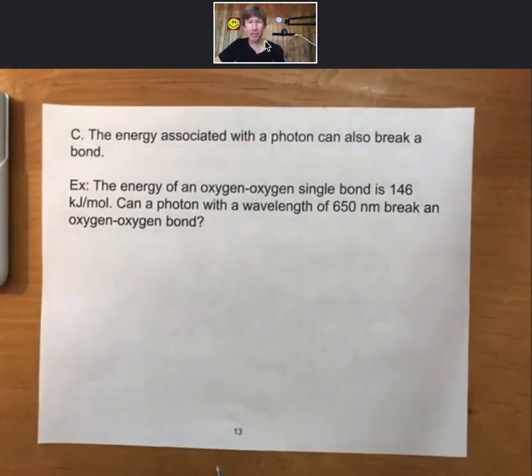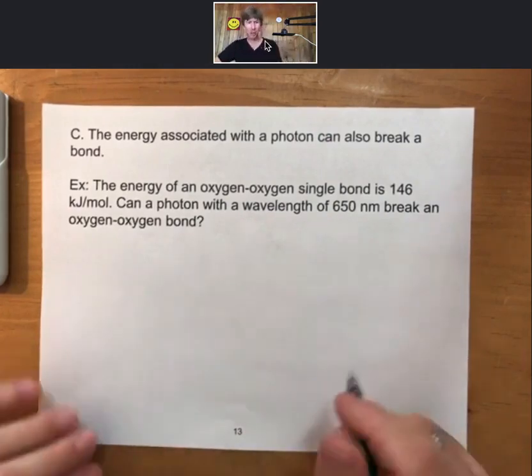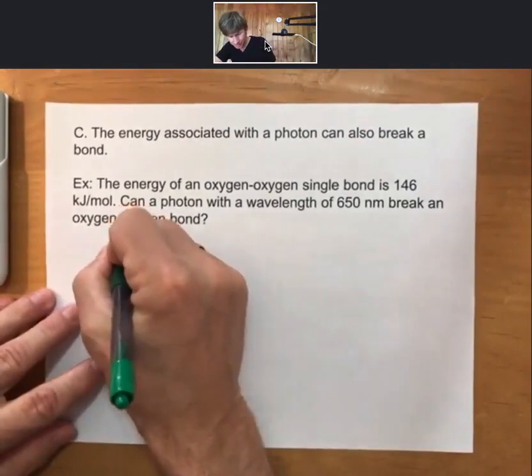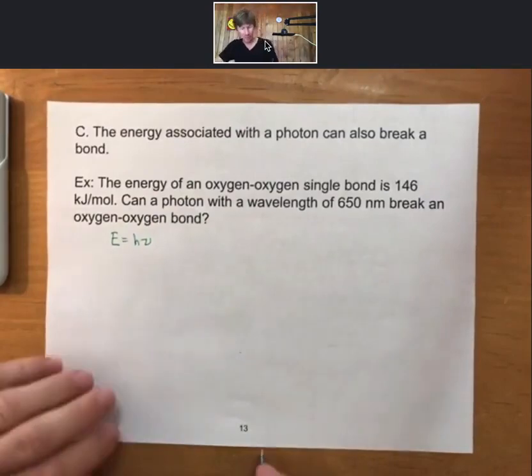As an example, the energy of an oxygen-oxygen single bond is 146 kilojoules per mole. The question we're going to ask is, can a photon with a wavelength of 650 nanometers break an oxygen-oxygen bond? This question is similar to at least one that you'll find on the homework, if not more than one, and potentially the exam. Here's how we're going to approach this.